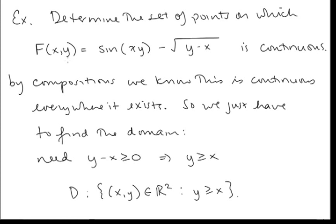Determine the set of points on which f(x, y) = sin(xy) − √(y − x) is continuous. sin(xy) is continuous because it's a composition of continuous functions, and √(y − x) is also a composition of continuous functions. Subtracting continuous functions remains continuous. So this function is continuous everywhere it's defined — we just need its domain. The sine function has no restriction, but the radical requires y − x ≥ 0, i.e., y ≥ x. The domain is {(x, y) ∈ ℝ² : y ≥ x}, and that is the set of points on which f is continuous.